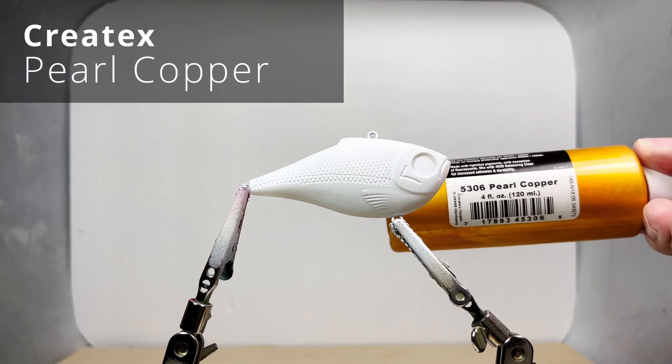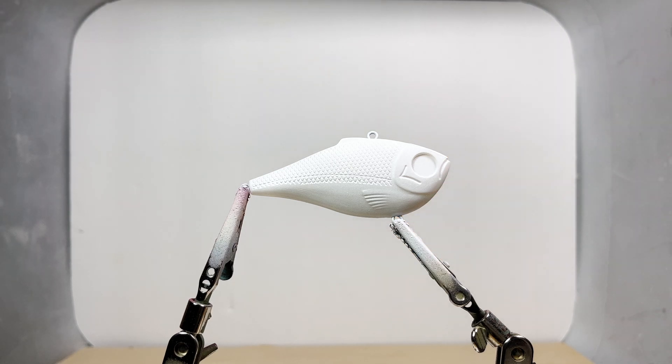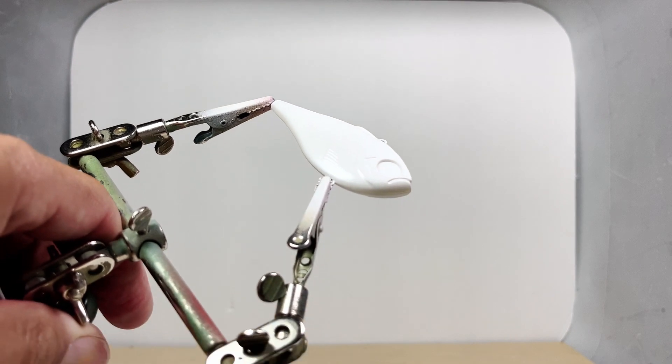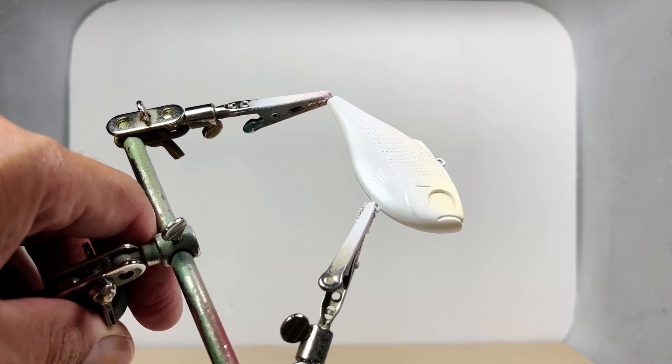I'll then use pearl copper for about three quarters of the lure. I'll apply it layer by layer until I get the richness I'm looking for.